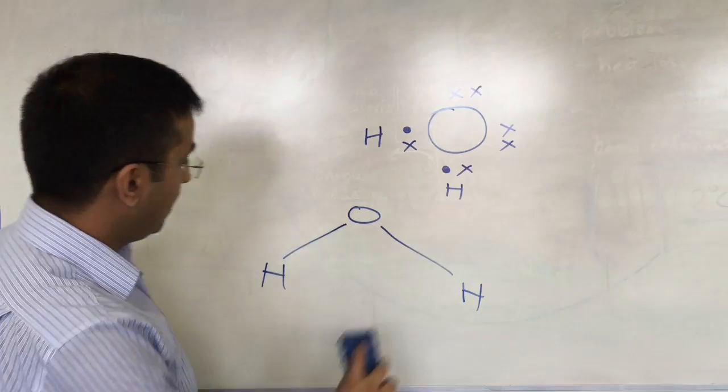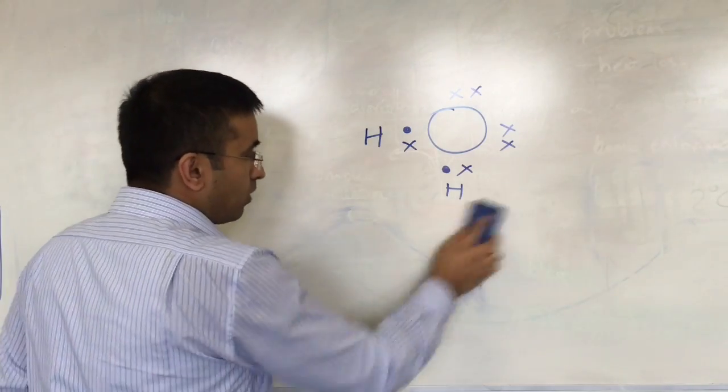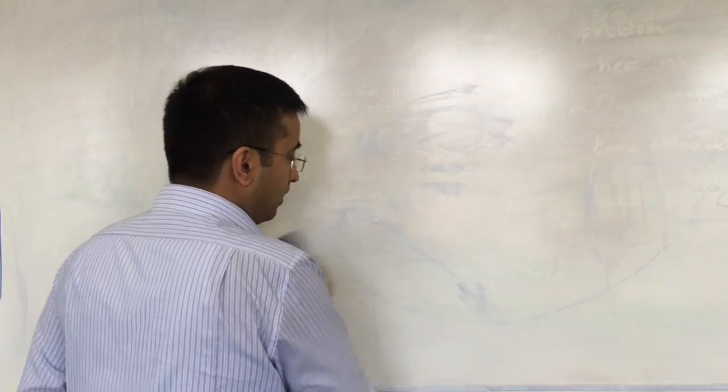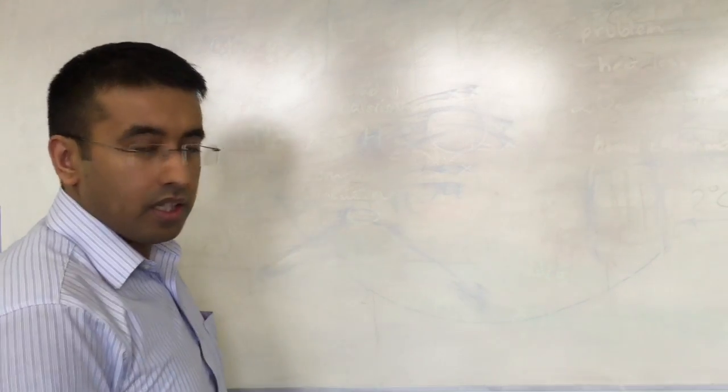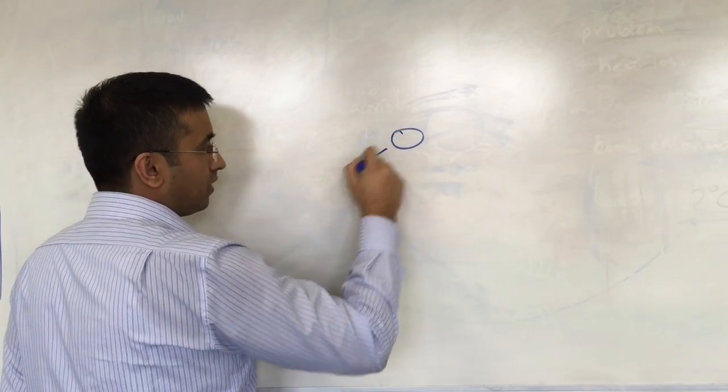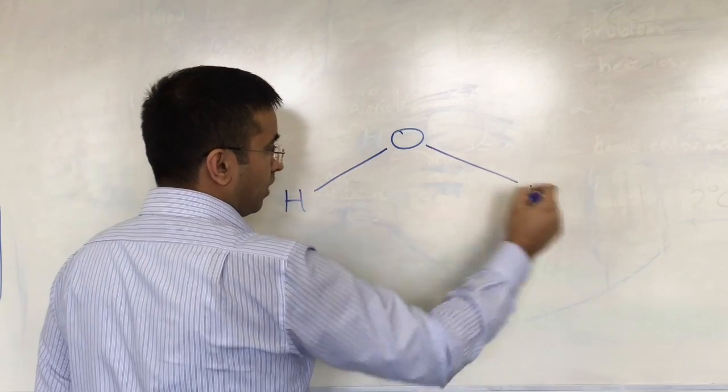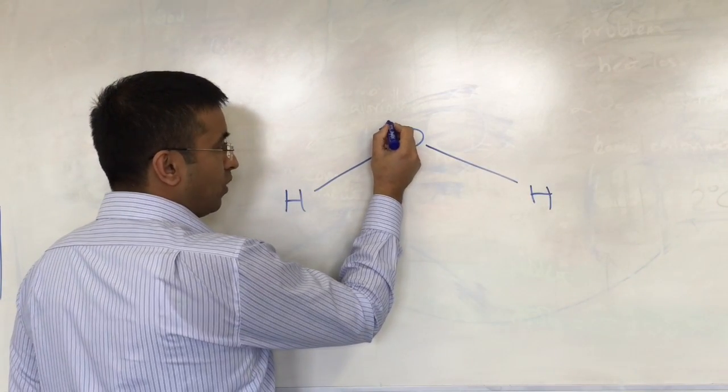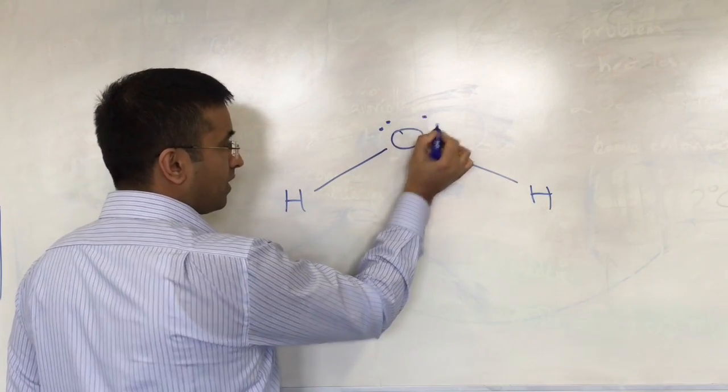Now first of all, let's look at the properties of water. We appreciate that it's a non-linear molecule and you've got these lone pairs of electrons on either side.